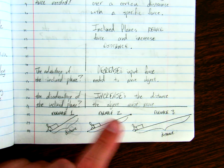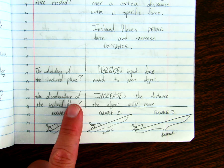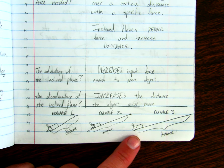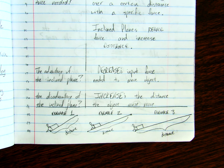So the advantage of the incline plane is that it decreases your input force. The drawback, the disadvantage to the incline plane, is that it increases the distance with which you must move. So that's exactly how incline planes work.